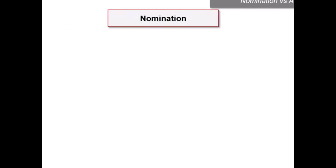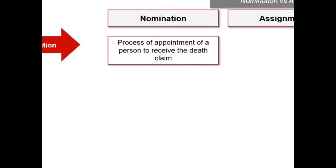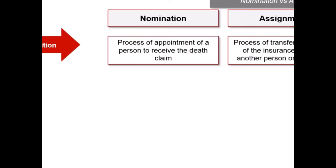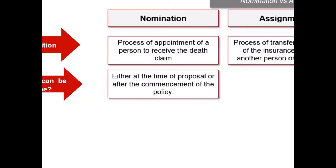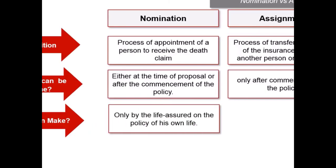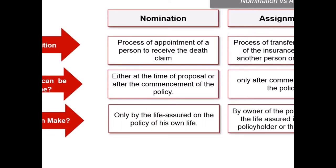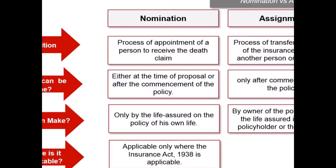Now let us compare nomination and assignment. Nomination is defined as the process of appointment of a person to receive the death claim, whereas assignment is defined as the process of transferring the title of the insurance policy to another person or institution. Second, nomination can be done either at the time of proposal or after the commencement of the policy. Third, nomination can be made only by the life assured on the policy of his own life, whereas assignment can be done by the owner of the policy — either the life assured if he is the policyholder, or the assignee.